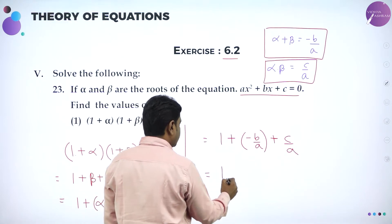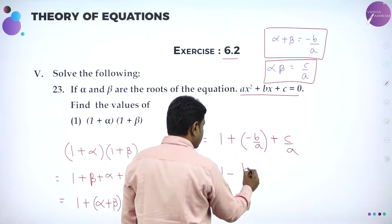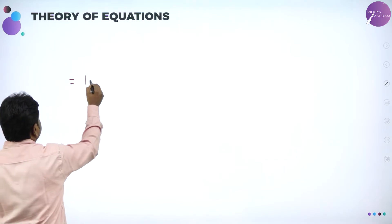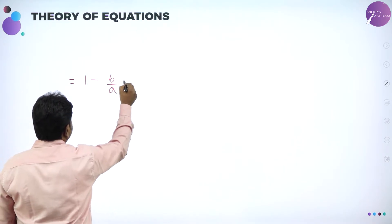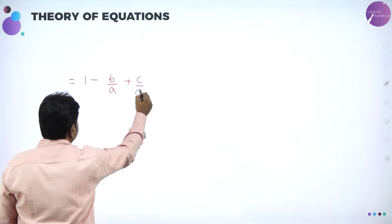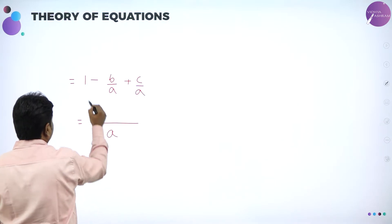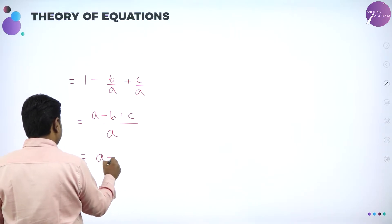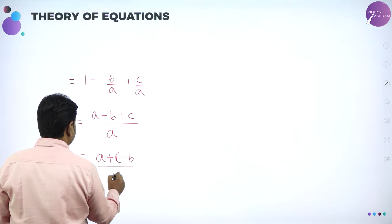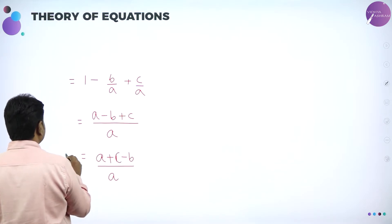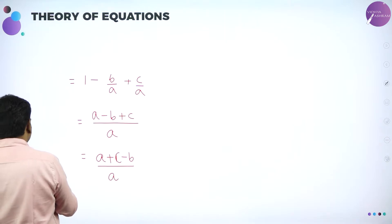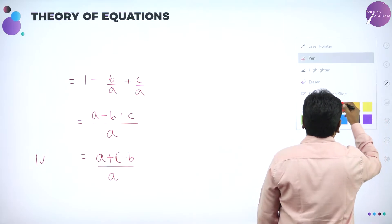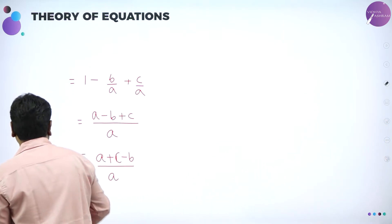Further simplify: it will become 1 minus B by A plus C by A. Take LCM: A into 1 is A, minus B plus C, all over A. We can say A minus B plus C divided by A, or rearranged as A plus C minus B divided by A. This is the value of 1 plus alpha into 1 plus beta.